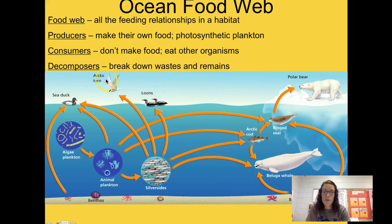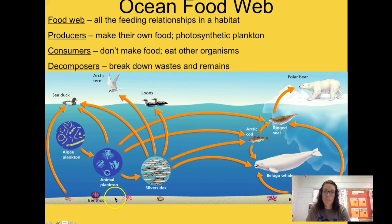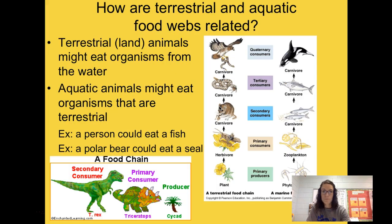Some terrestrial animals interact with ocean organisms too. The arctic tern is a bird that interacts with ocean organisms, and the polar bear — a terrestrial organism — eats the ringed seal. We also have decomposers, which are often your benthos at the ocean floor. They break down wastes and remains of other organisms. That's a quick review of what we already know from the ecosystems unit.